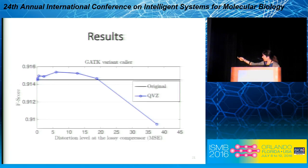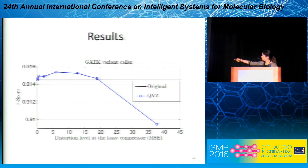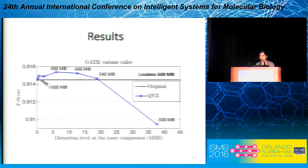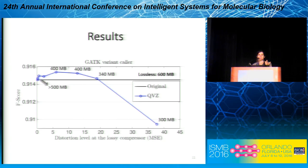We applied the lossy compressor at different distortion levels to see what happens. Showing results just for GATK with F-score versus distortion level, the black line corresponds to the original performance with lossless data and the blue line corresponds to the denoised performance using QVC as the lossy compressor. As we increase the distortion we get an improvement in performance, but only up to a point — beyond that there is a huge degradation. At the optimal point we can improve performance while also decreasing the size of the data from about 600 megabytes to 400 megabytes, and the results are more consistent across data sets.